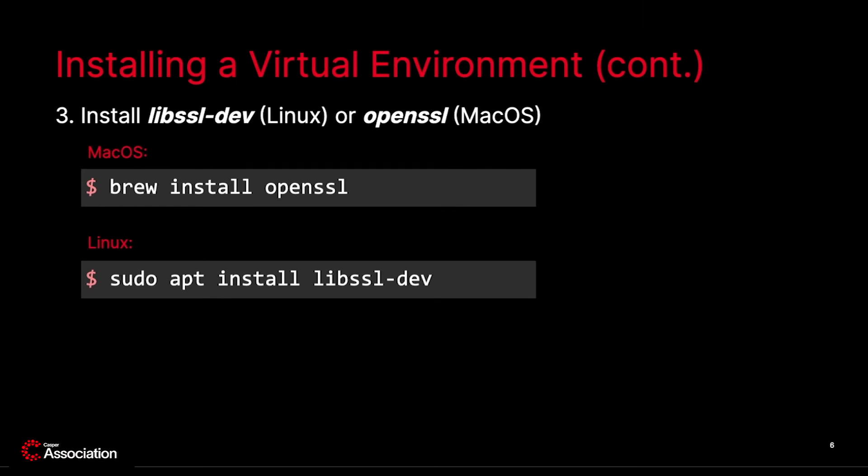In step 3, install either libssl-dev for Linux or OpenSSL for macOS. These are toolkits for the Transport Layer Security and Secure Sockets Layer protocols. They also serve as general purpose cryptography libraries.